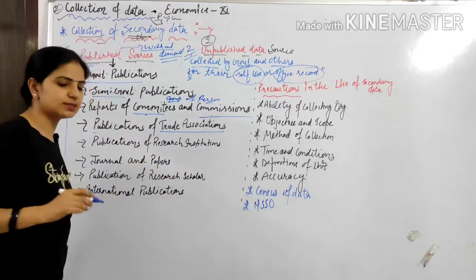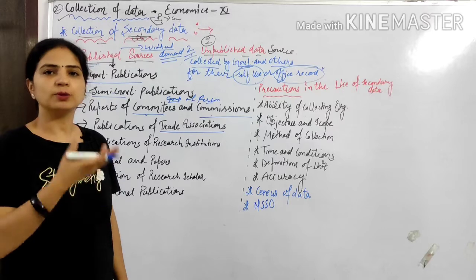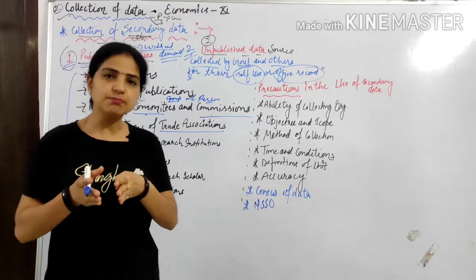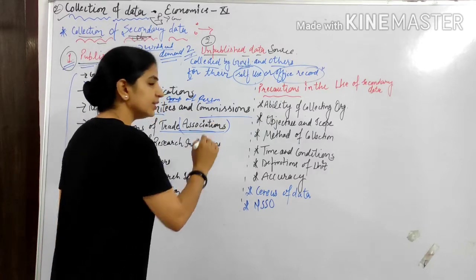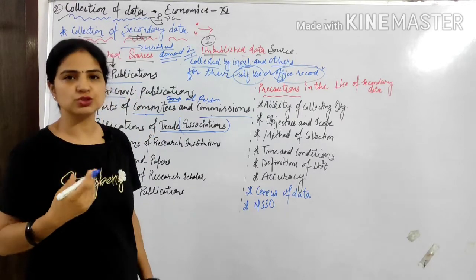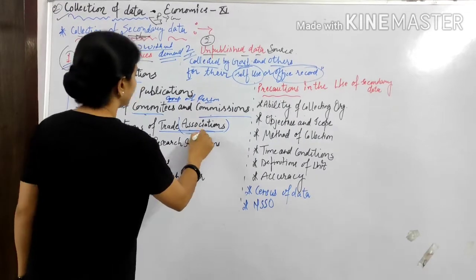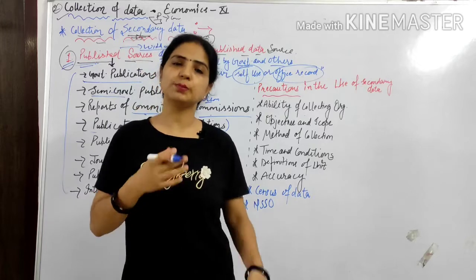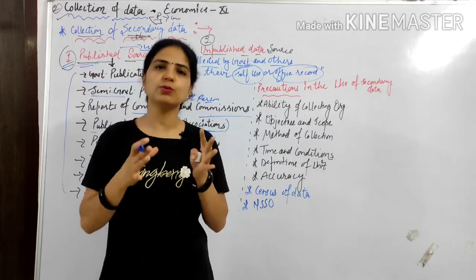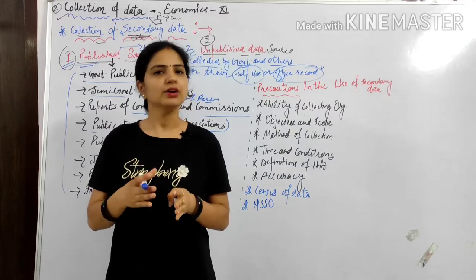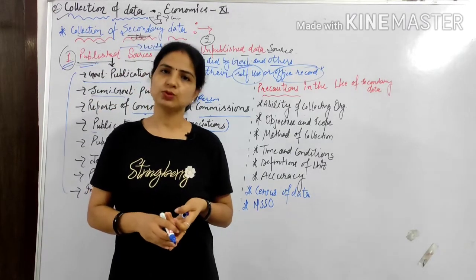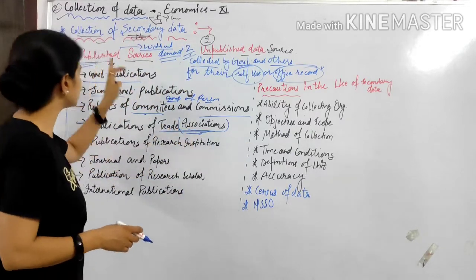Then there are trade associations — like marketing associations, housing associations, and credit associations related to banking. There are also lawyer associations, doctor associations, and other professional trade associations. Each association publishes reports about its society — for example, a marketing association publishes all marketing-related reports in the form of journals, separate magazines, or newspapers. These are also examples of published sources.